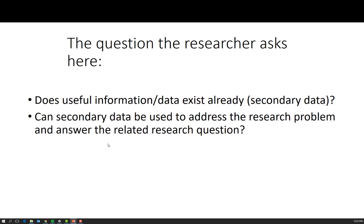When looking at secondary data, the question to ask yourself is: does useful information or data exist already? And can that secondary data be used to address the research problem and answer related research questions? Last week I asked you to decide on what topics you were going to search for when looking for secondary data, both academic literature and other secondary sources — this is what we would call a research design. This week we're going to look at whether that secondary data you collected can address the research problem, answer the research questions, or is it simply there to clarify the context or the situation in which the client finds itself.